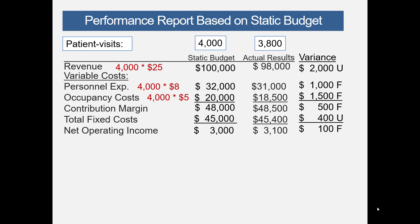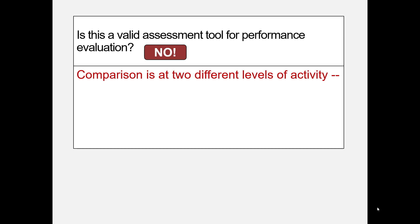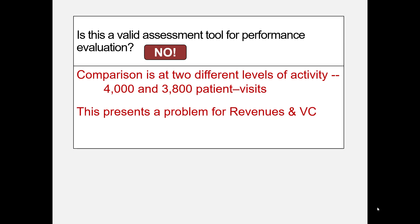We really need to focus on the cause of the personnel and occupancy cost variances. These are variable costs and both variances are favorable. But is it conceivable that the favorable variance is the result of lower activity rather than actually controlling the costs? That is a distinct possibility. So is this a valid assessment tool for performance? No — the comparison is at two different levels of activity: 4,000 and 3,800 patient visits. This is especially problematic for revenues and variable costs since they change with activity.